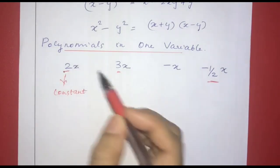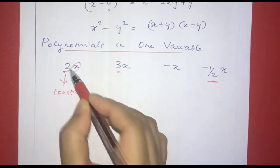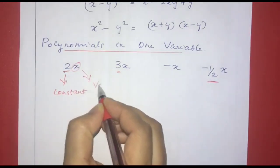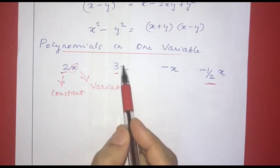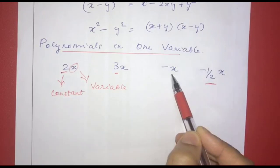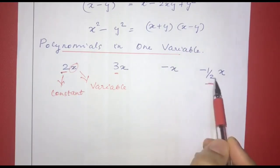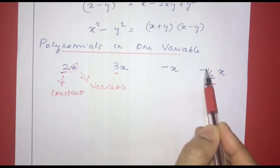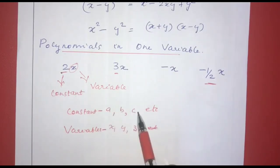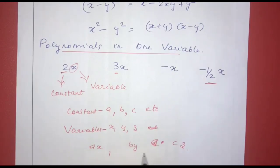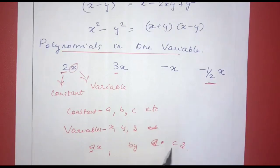When we solve a problem, the value of x is changing. That means we call x in 2x a variable. In 3x, 3 is constant and x is variable. In minus x, minus 1 is constant and x is variable. In minus 1 by 2x, minus 1 by 2 is constant and x is variable. In other words, we call constants a, b, c and variables x, y, z.